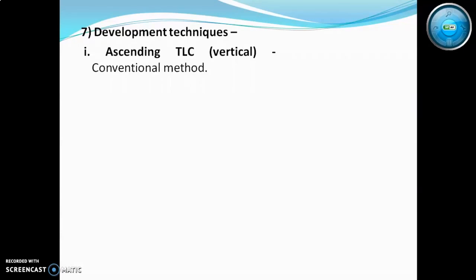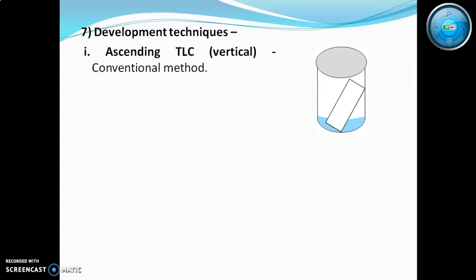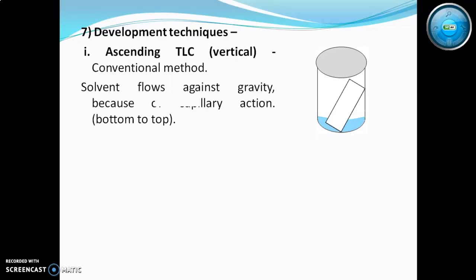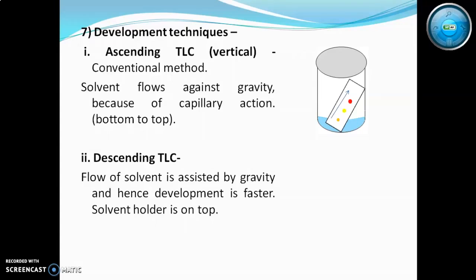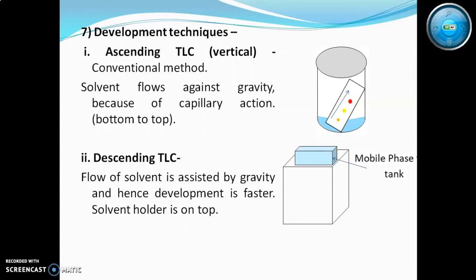The first development technique is ascending TLC or vertical TLC, which is the conventional method. The chamber is filled with mobile phase, chamber saturation is done, and the TLC plate is placed in the chamber with the baseline not dipping in the mobile phase. The lid is kept on and the plate is allowed to develop. The solvent flows against gravity due to capillary action, running from bottom to top. In descending TLC, the flow of solvent is assisted by gravity, so development is faster. The solvent holder is at the top of the development chamber and the mobile phase runs downward.